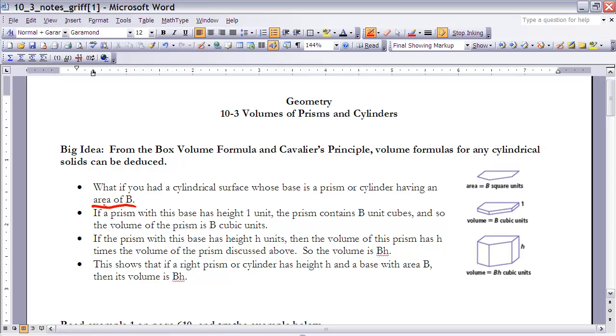Now if we kind of continue that idea then if instead of raising it just one unit what if we raise it H units? Well then we're going to have B times H or the number of unit cubes that would fit in that figure would be the area of that base times the height of the prism. And what that does for us is it allows us to say that the volume for any prism or cylinder will be equal to the area of its base times the height of that prism.